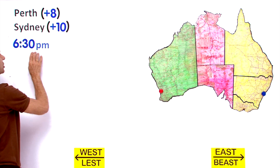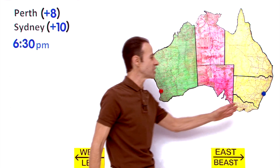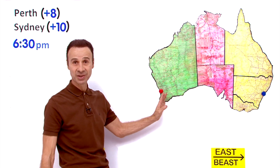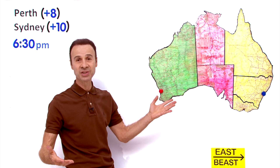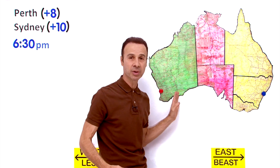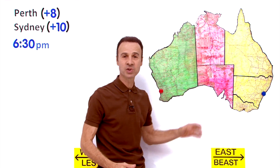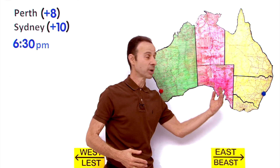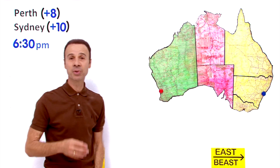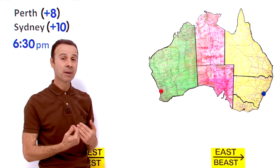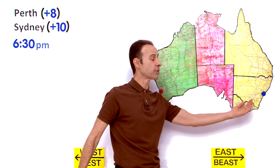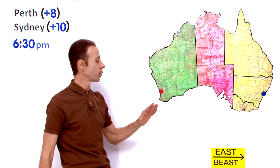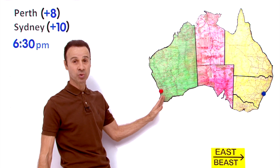The time in Sydney needs to be 6.30pm in the evening. What time does Joshua need to call from Perth? We are going to do this in 3 easy steps. Number 1, we are going to work with the map of Australia right over here. Number 2, we are going to find the difference in standard times between Perth and Sydney. And number 3, we are going to work out whether we add or subtract time based on which way we are going from Sydney, since we know the time in Sydney is 6.30pm and we are going west to find the time Joshua needs to call.